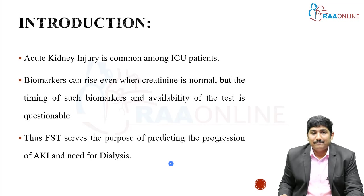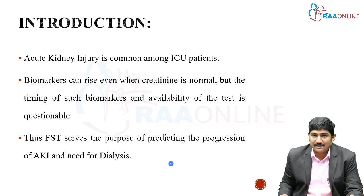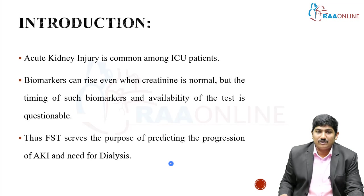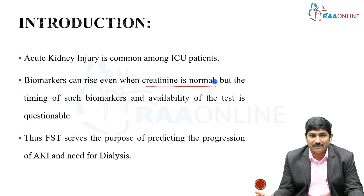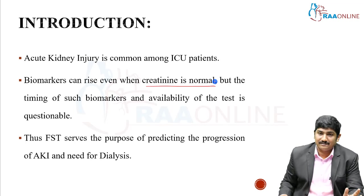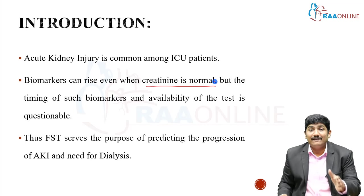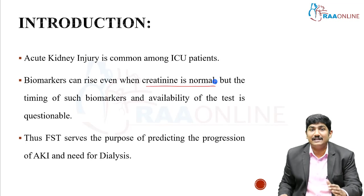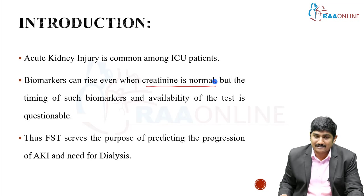Acute kidney injury is common among ICU patients. Biomarkers can rise even when creatinine is completely normal — so you may not know when to check them. On a routine basis we check creatinine, not biomarkers, and the availability and cost of biomarkers is very high. We need surrogate markers to identify AKI and predict whether the kidney will improve. Thus the Furosemide Stress Test serves the purpose of predicting the progression of AKI and possibly the need for dialysis.